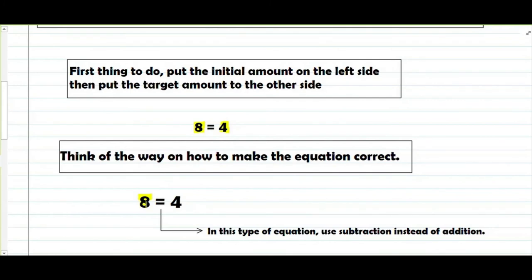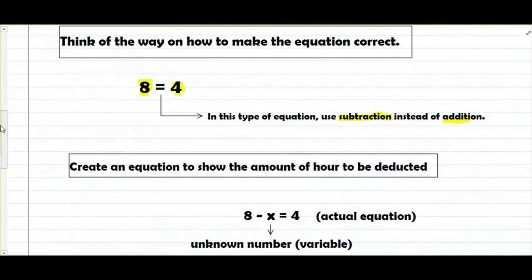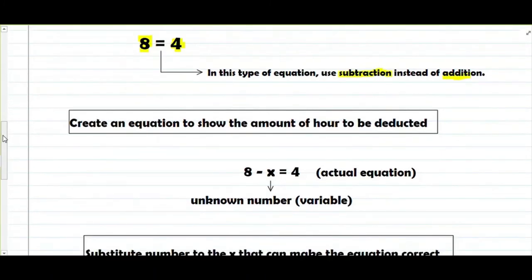Ang mapapansin mo dito: yung pagkakaiba ngayon, nasa kaliwa ngayon yung mas malaki kesa sa mas maliit na nasa kanan. Pagkaganyan, in this type of equation, you use subtraction instead of addition. Subtraction ang gamitin natin ngayon. Create an equation to show the amount to be deducted — paglalagay ka ng variable para maging tama yung equation. Ito ngayon ang magiging original equation mo: 8 minus x equals to 4. Ito x yung variable — unknown number siya.